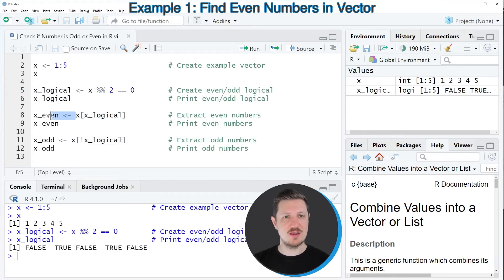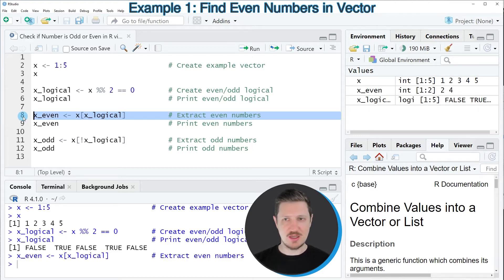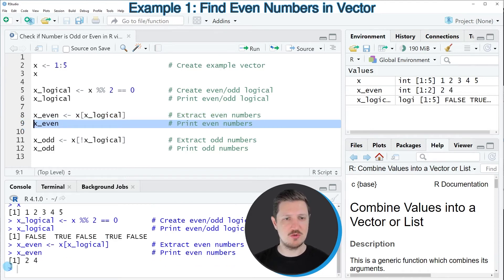I'm creating a new data object called x_even which contains the output of this part of the code. After running line 8, you can see that this new data object x_even appears, and we can also print it to the RStudio console. You can see that we have created a new vector which contains only the even numbers of our input vector.